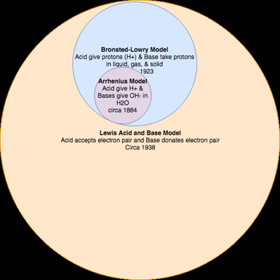In 1838, Justus von Liebig proposed that an acid is a hydrogen-containing substance in which the hydrogen could be replaced by a metal. This redefinition was based on his extensive work on the chemical composition of organic acids, finishing the doctrinal shift from oxygen-based acids to hydrogen-based acids started by Davy. Liebig's definition, while completely empirical, remained in use for almost 50 years until the adoption of the Arrhenius definition.